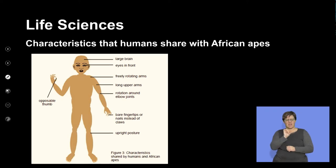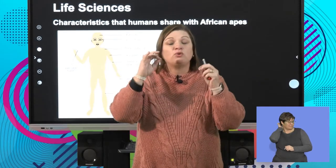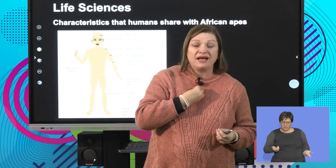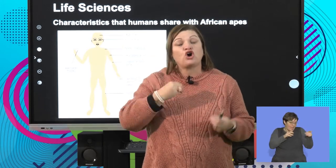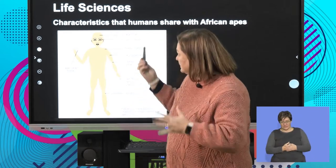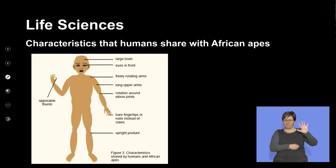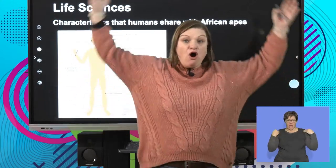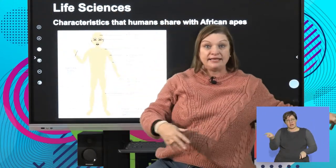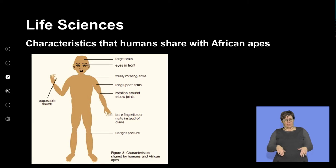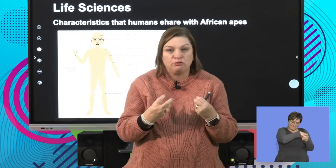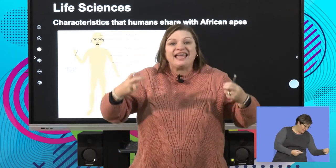Why do we belong to the Primates? We belong because we have things in common with them — not because we're a monkey or great ape, but because we share characteristics. What do we have in common? We have an opposable thumb, eyes in the front of our head, arms that can rotate, legs that can rotate, an upright posture, and fingertips with nails. So we're in the primate group because we share these characteristics.